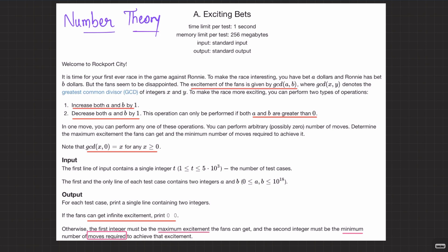Welcome back everyone. This is an exciting question — a classical question on number theory that tests how well we know GCD. This is a tricky question if you don't truly understand how GCD works, but encountering such questions is how you learn and grow. Let me quickly read the question: they define something called 'excitement.'